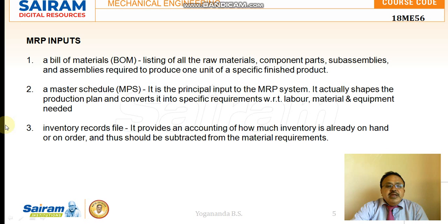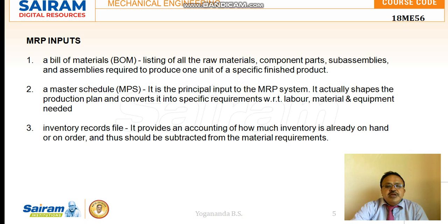The inputs of MRP are: bill of materials, master production schedule, and inventory record file. The bill of materials is a listing of all the raw materials, component parts, and sub-assemblies required to produce one unit of the finished product.